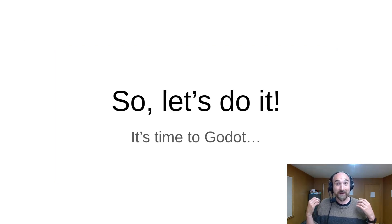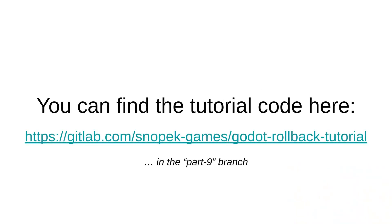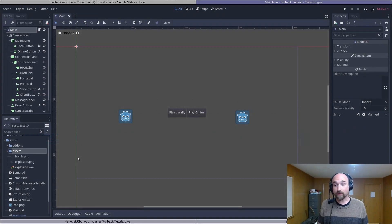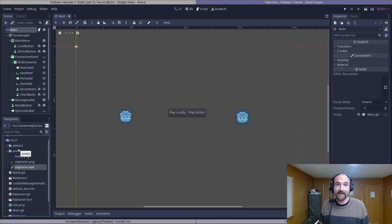So we're going to add an explosion sound effect to our demo game. It's going to be pretty quick and easy — the Godot Rollback Netcode add-on pretty much handles this one for us. I've already downloaded the sound file explosion.wav into the assets directory. You can grab it from the GitLab repo for this tutorial project. The link is in the description below.